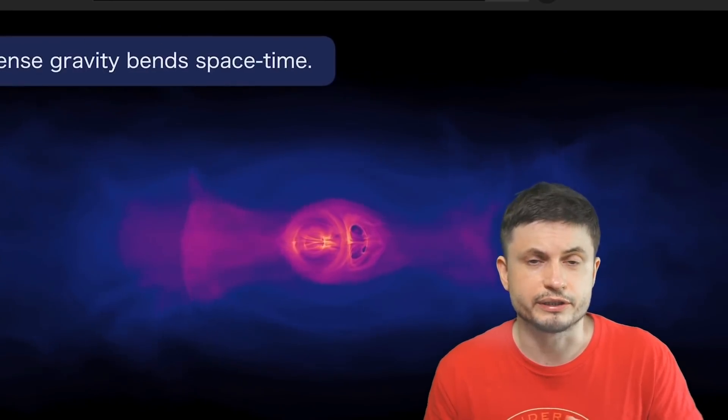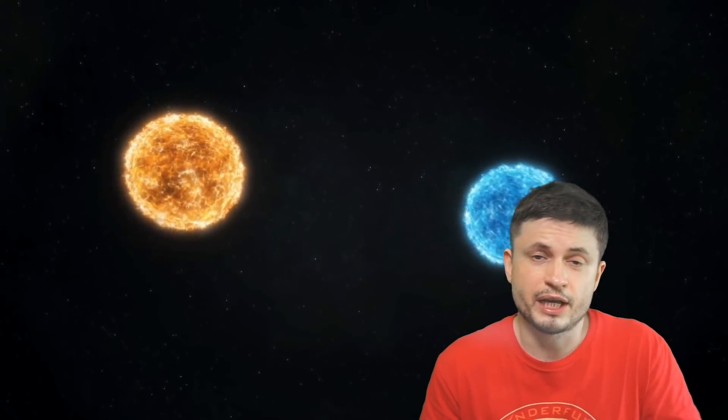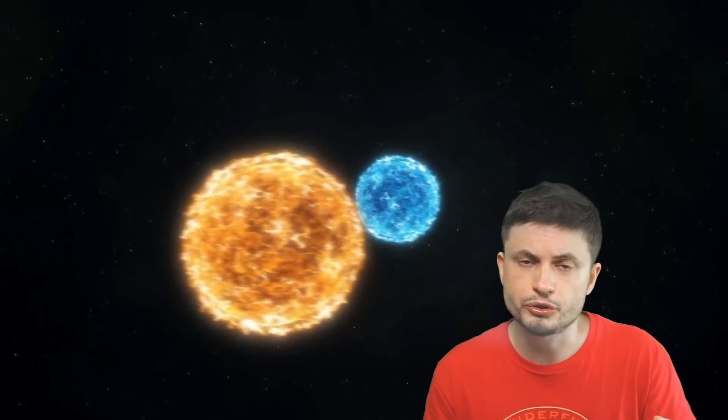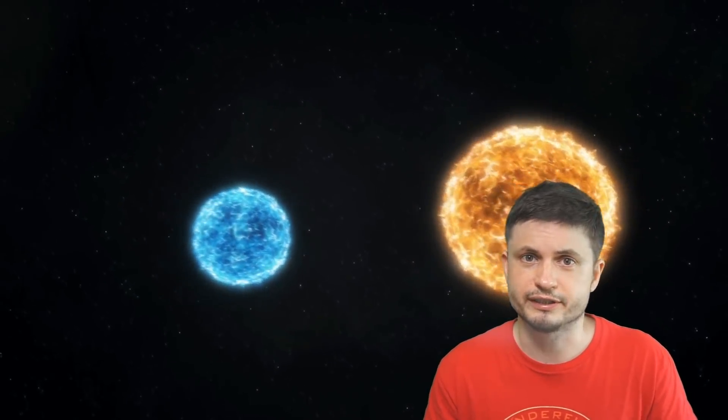But for a very long time there was another theory in regards to binary systems, and in regards to what happens to the stars themselves, especially if these stars are extremely massive, and if one of them happens to turn into a black hole or a neutron star slightly sooner.